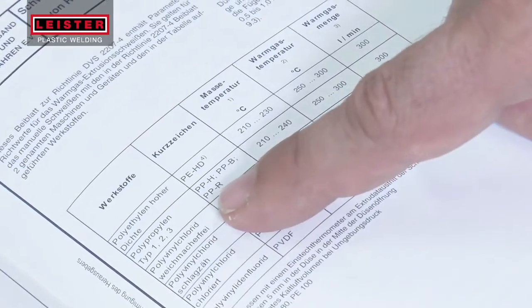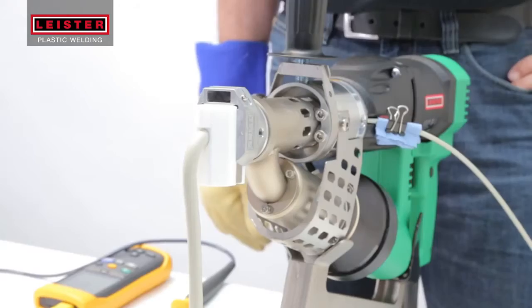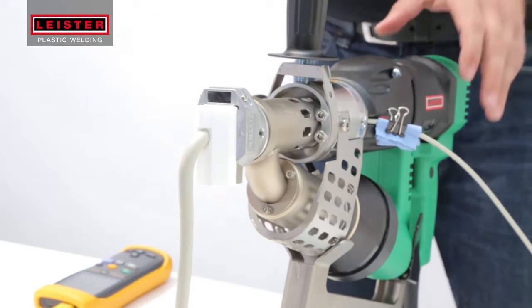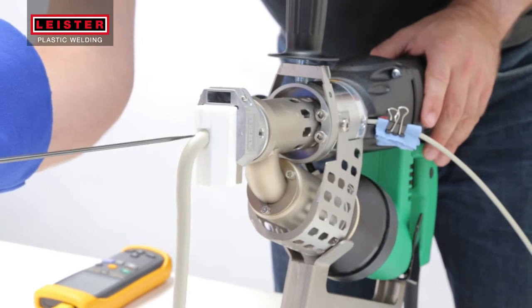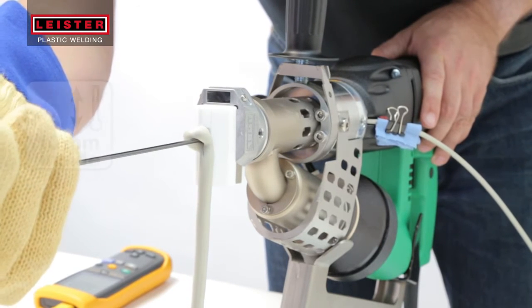The processing temperatures for the type of plastic being welded can be found in the material manufacturer's data sheet. To test the plast temperature, insert a needle temperature probe and measure the material at 10 millimeters inside the welding shoe.